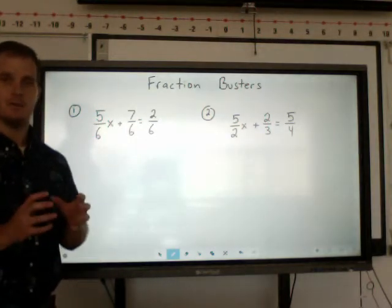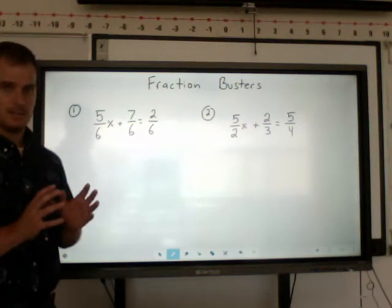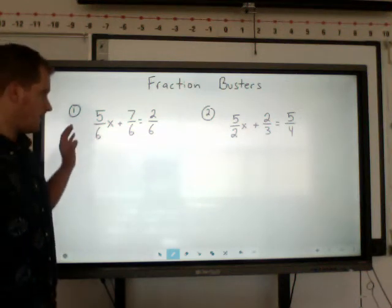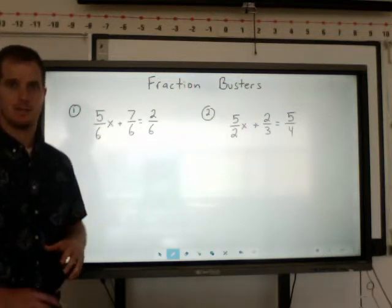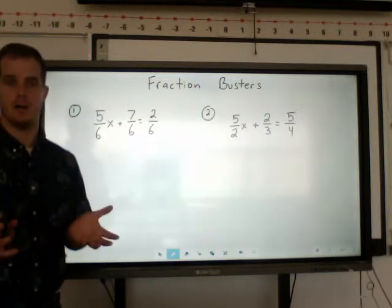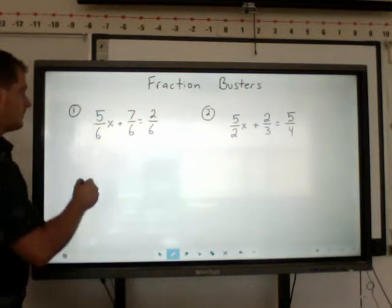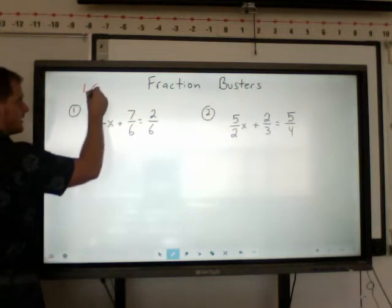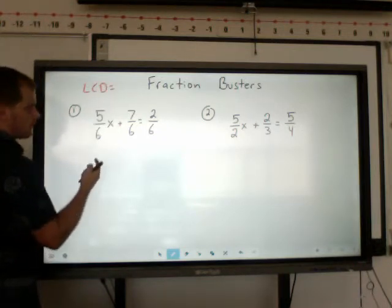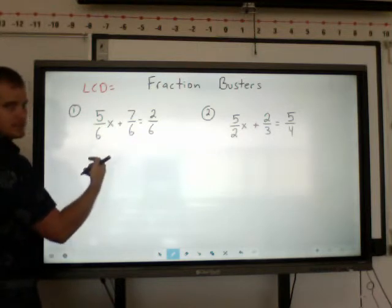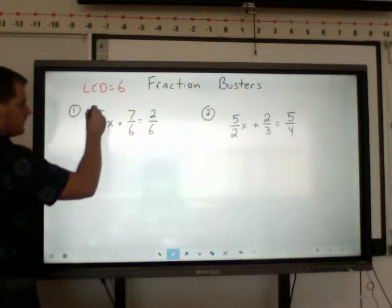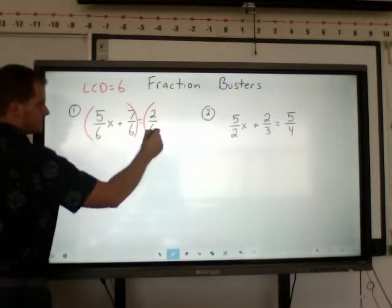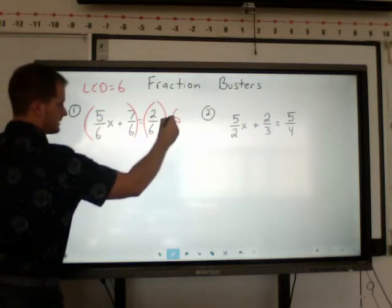We use that value, whatever that LCD is, to end up multiplying through the equation on both sides of the equal sign to try to eliminate the fractional look of the problem. In the first one, our least common denominator is going to be 6, because 6 is the value that they all can go into quite easily. We multiply both sides of our equal sign by this 6.